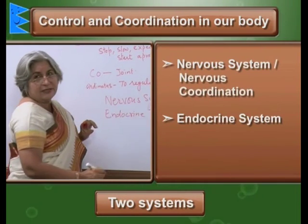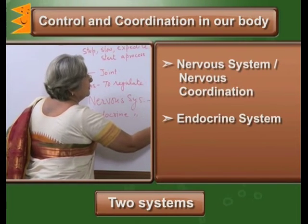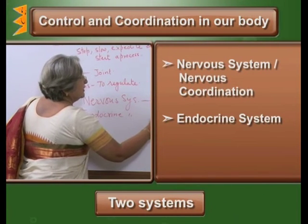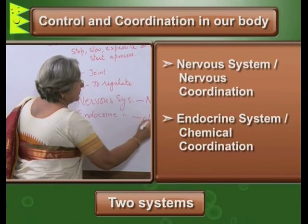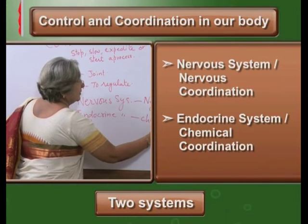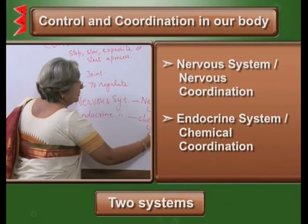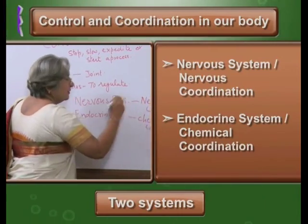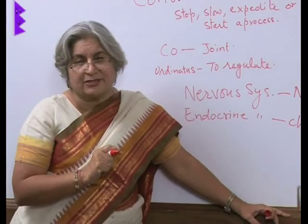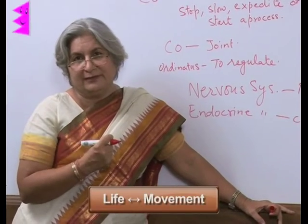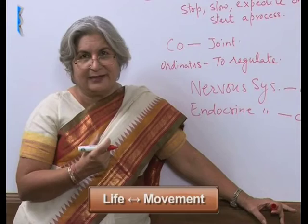One of these systems is the nervous system, and the second is the endocrine system. This is also called nervous coordination, and the endocrine system provides chemical coordination.